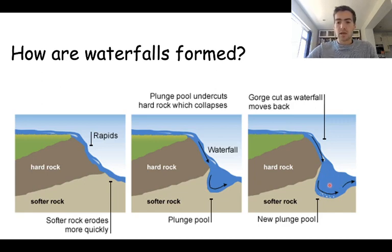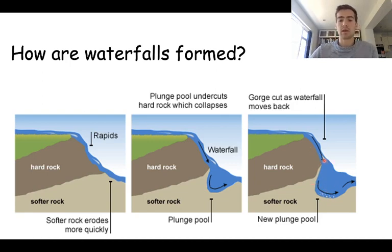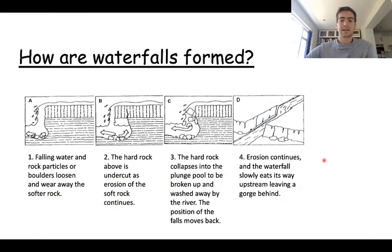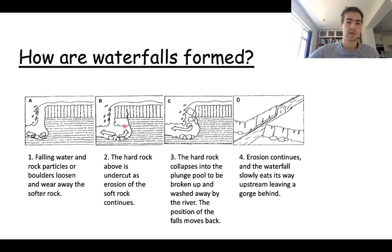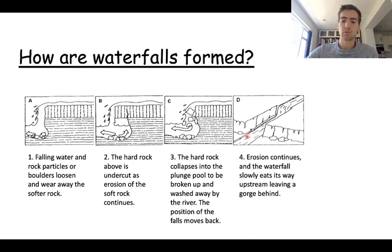This erosion causes the waterfall to retreat back and back, and eventually the hard rock will also be eroded — as you can see in this diagram. The hard rock is on top and the soft rock is below. When the water flows over the end of it, it starts to break down the soft rock underneath, and then eventually the hard rock collapses into the river. We're then left with something called a gorge, where the river retreats backwards as it continues to erode more and more.